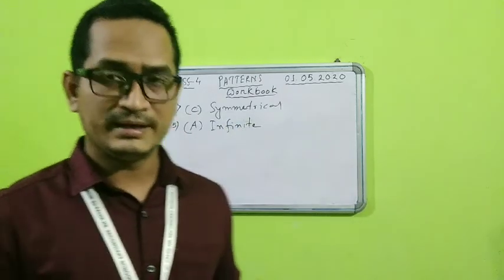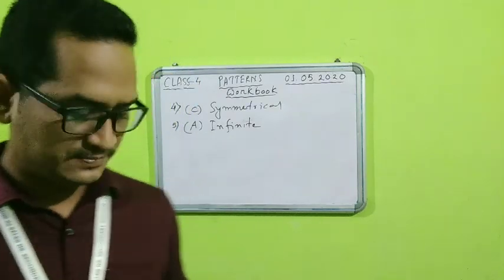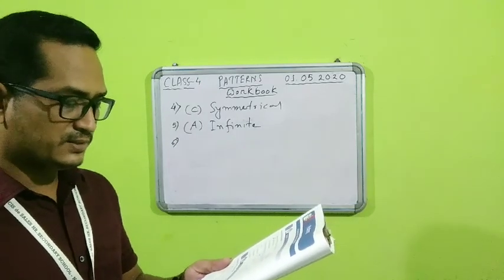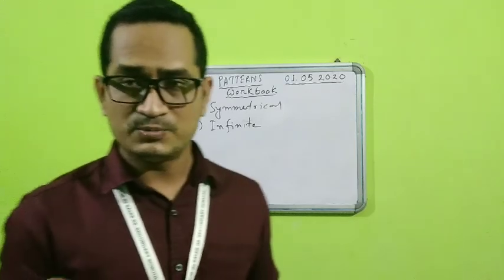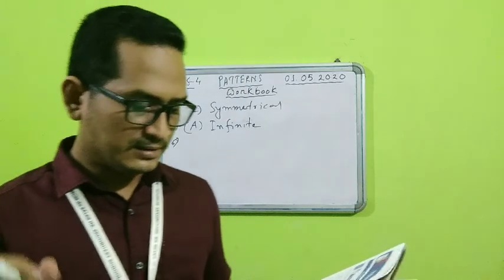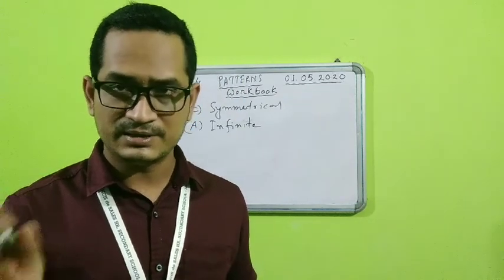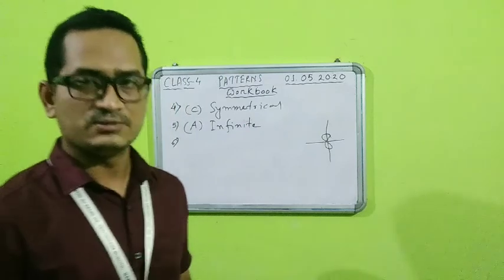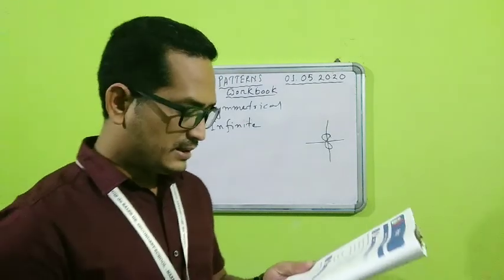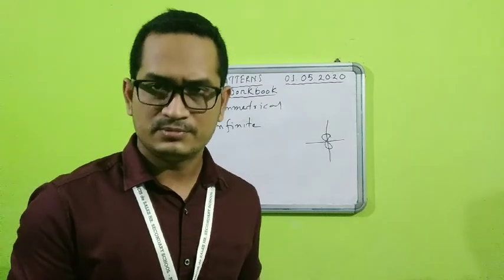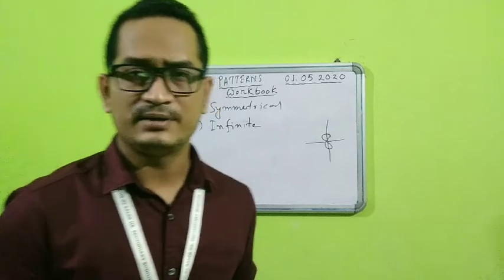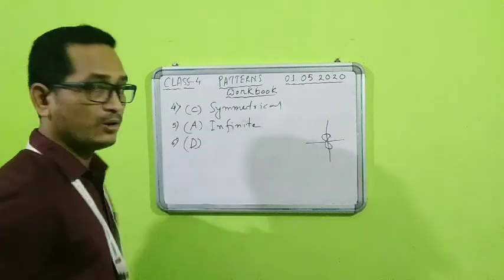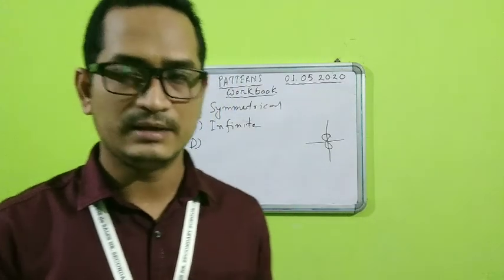The word 'infinite' means that which does not end — countless. Question number 6: blank can have vertical or horizontal lines of symmetry. Natural objects can have both types of lines of symmetry. Numbers also — for example, the number 8 can have a vertical line of symmetry and a horizontal line of symmetry. Artificial objects made by humans can also have both. So option D is correct — all of these will have both vertical and horizontal lines of symmetry.